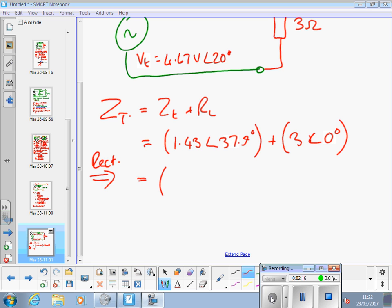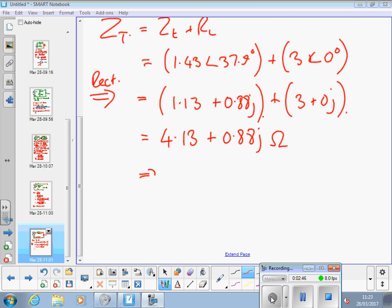So, we've got 4.13, 0.88j. Converting to polar, 4.22 and that's ohms.